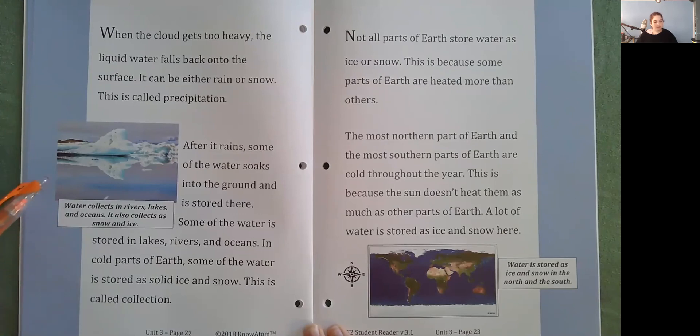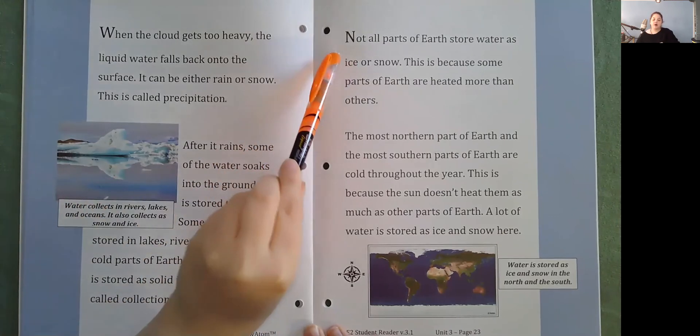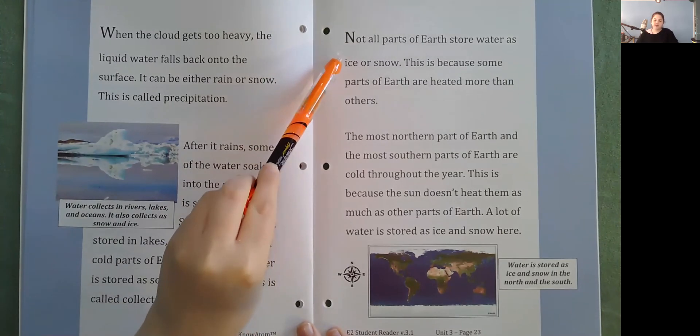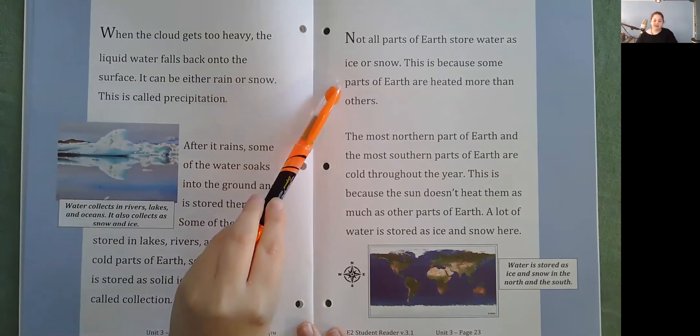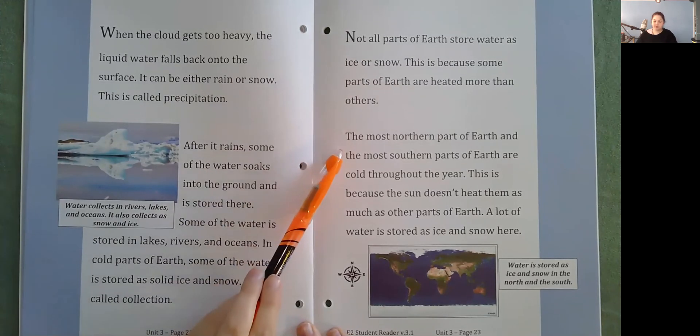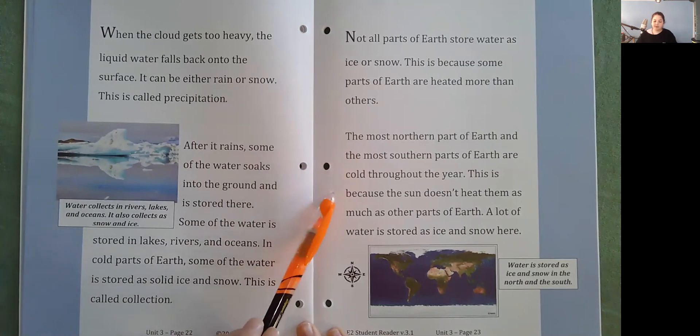Water collects in rivers, lakes, and ocean. It also collects as snow and ice. Not all parts of Earth store water as ice or snow. This is because some parts of Earth are heated more than others. The most northern part of Earth and the most southern parts of Earth are cold throughout the year. This is because the sun doesn't heat them as much as other parts of Earth. A lot of water is stored as ice and snow here.